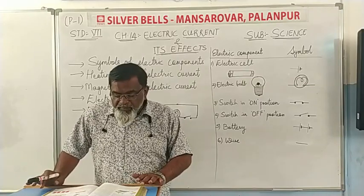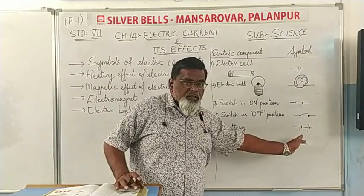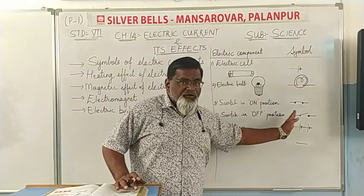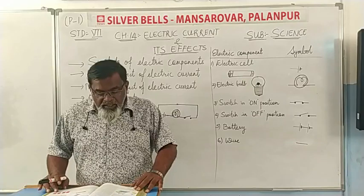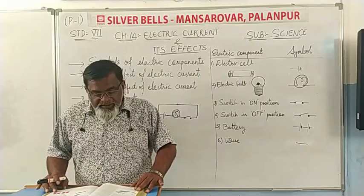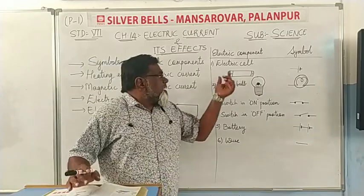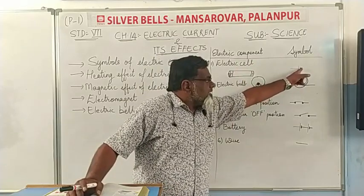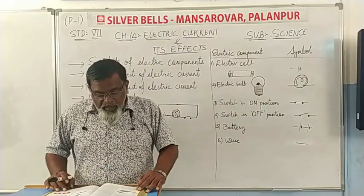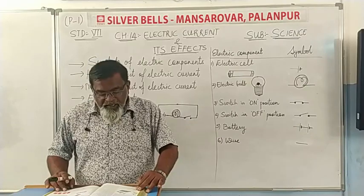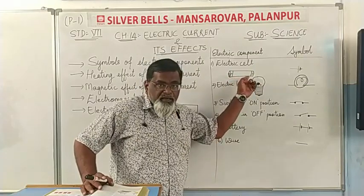There was an easier way to represent electric components using symbols. Some common electric components can be represented by symbols. In the table, some electric components and their symbols are shown — you may come across different symbols in different books, but in this book we shall use the symbols shown here. Look at the symbol for the electric cell: there is a longer, thinner line and a shorter, thicker parallel line. Do you recall that an electric cell has a positive terminal and a negative terminal?